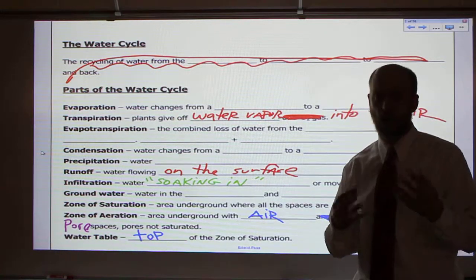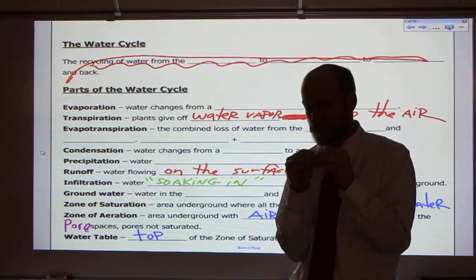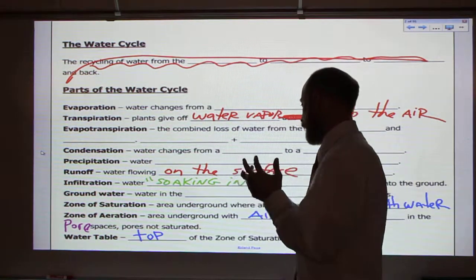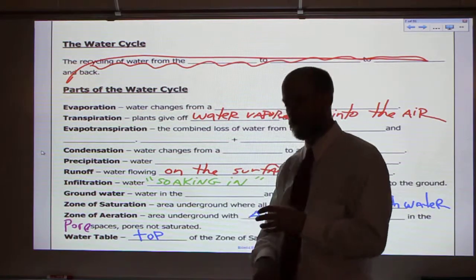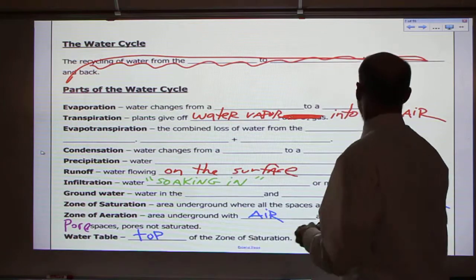Zone of aeration is where there's no water, and the spaces between, let's say, the individual sand grains that make up soil is empty with air, so it's dry down there. Water table is the top of the zone of saturation. Let's look at some of these diagrams now.